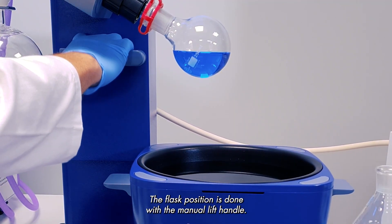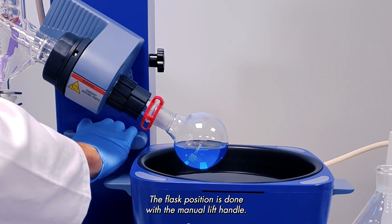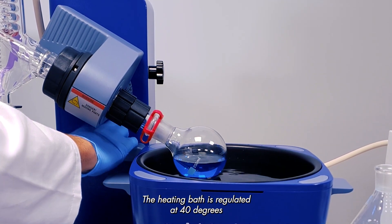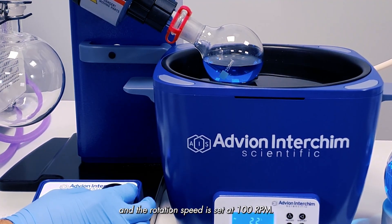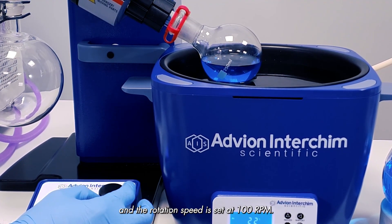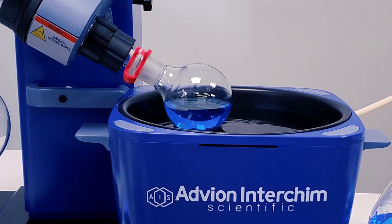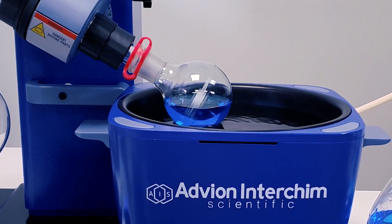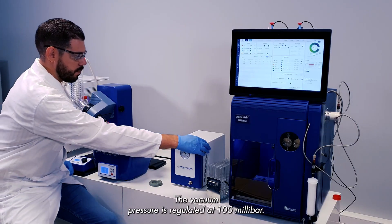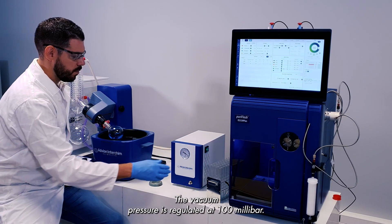The flask position is done with the manual lift handle. The heating bath is regulated at 40 degrees and the rotation speed is set at 100 rpm. The vacuum pressure is regulated at 100 millibar.